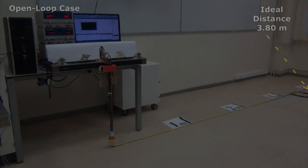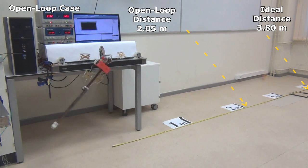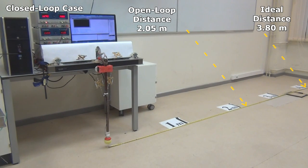In real-world experiments with the optimal control problem reference trajectories applied in an open-loop manner, the ball-throwing distance decreases to 2.05 meters compared to the 3.80 meters ideal distance. When we follow the reference trajectories with nonlinear model predictive control in closed-loop, the distance increases to 3.22 meters.